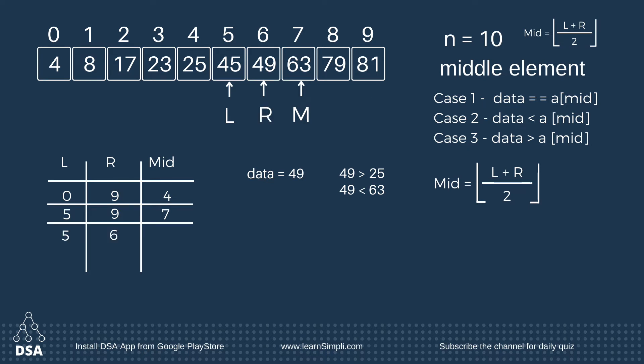Left variable will remain as it is and the right variable will be moved: R becomes mid minus 1. So now find the mid value. Left is 5 and right is 6. Mid equals 5 plus 6 divided by 2 equals 5.5, and the floor value is 5.